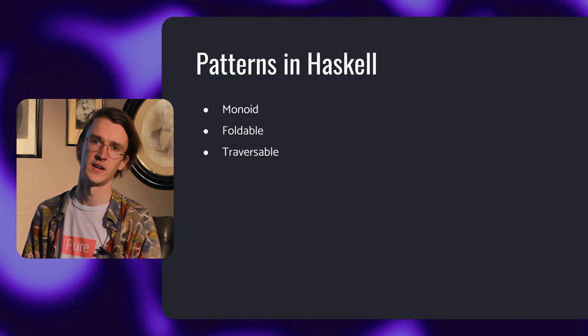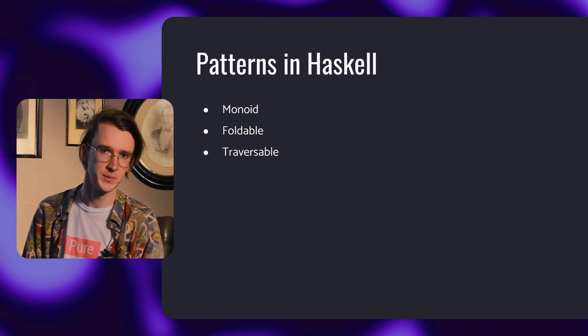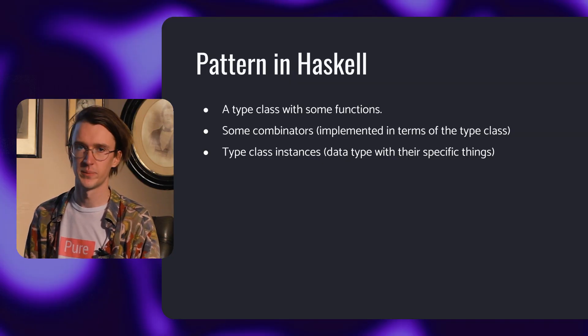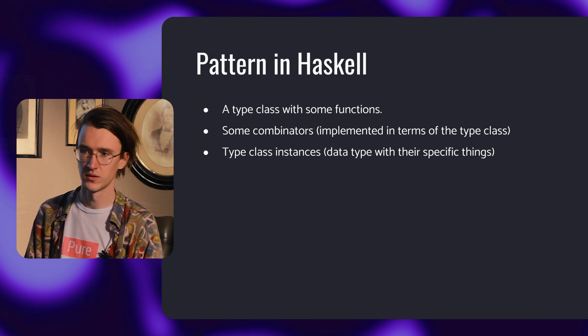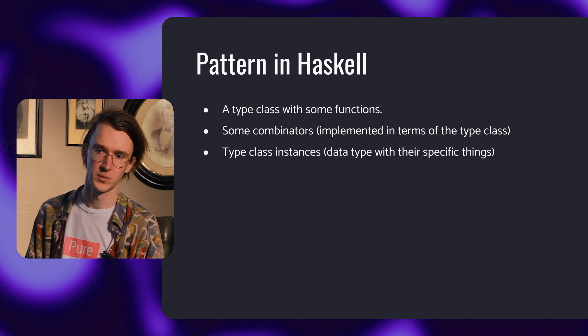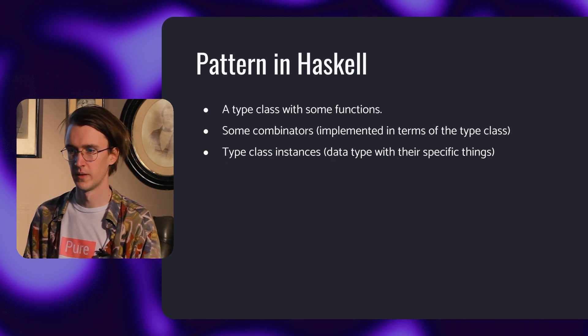In Haskell there are several other patterns for designing code. One of them is using type classes. Haskell has the monoid pattern, the foldable pattern, the traversable pattern and so on. Quick note: Haskell pattern names are not as friendly, but at least Haskell patterns are not compensated for fundamental language issues. We don't have to write a bunch of boilerplate called design pattern code to deal with recording language problems. Each of these patterns usually comes in the form of a type class with some functions, some combinators used and implemented in terms of these classes, and type class instances, which are just data types with their specific things. The type classes allow us to write concise code, and at the same time the compiler ensures that we're using them properly. And this leads to the construction of correct and comprehensible code.